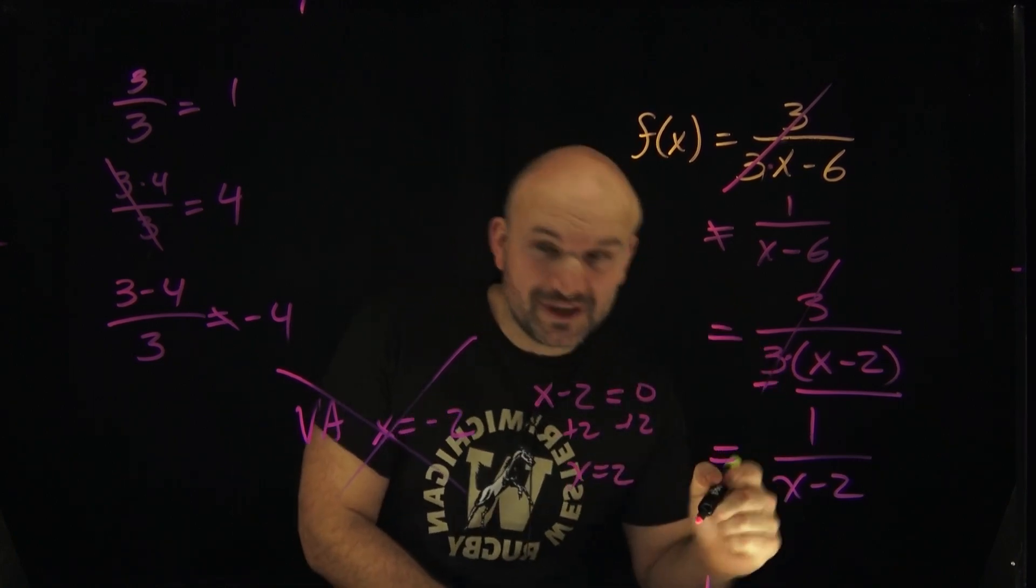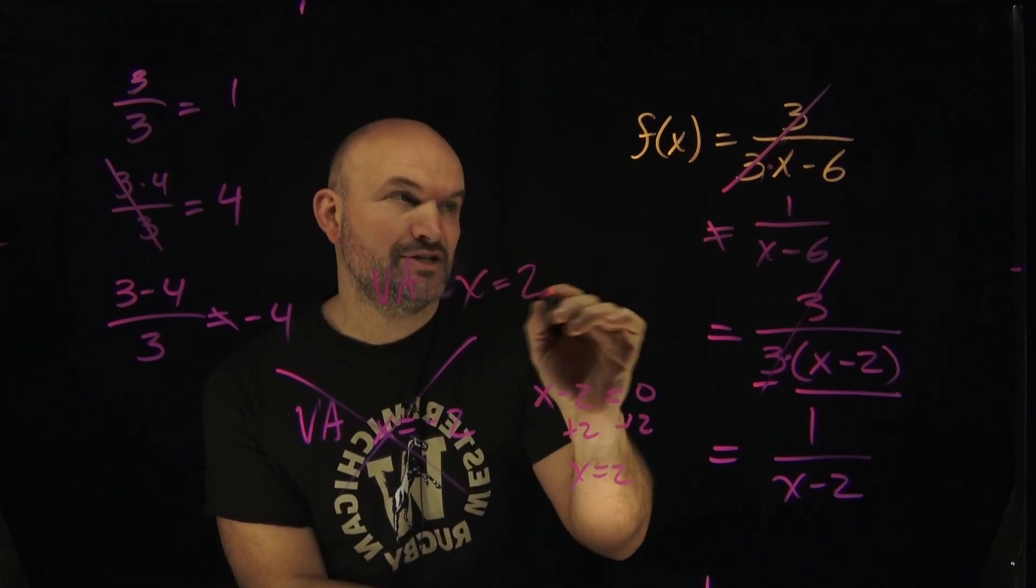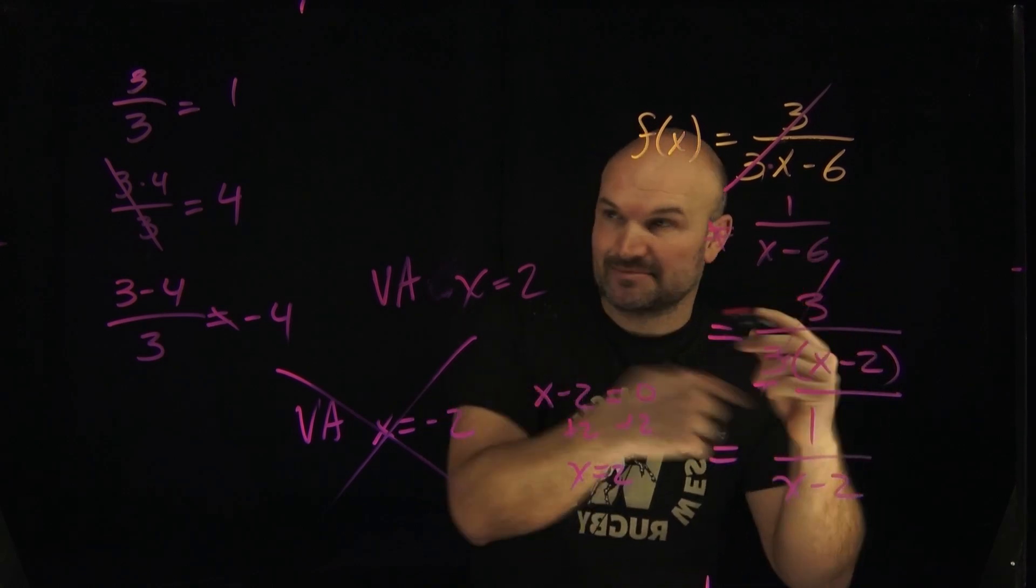Therefore, the vertical asymptote of this equation is going to be x is equal to 2. It's not 3. A lot of times students will say, oh, these 3s divided out, so therefore that's an asymptote. No, no, no. It's not a discontinuity.